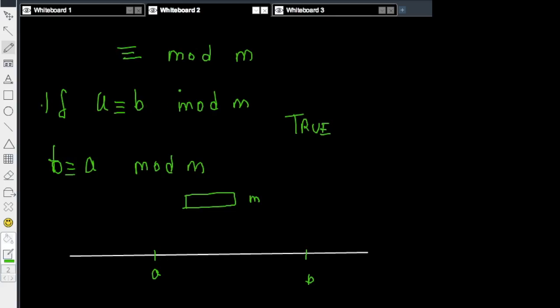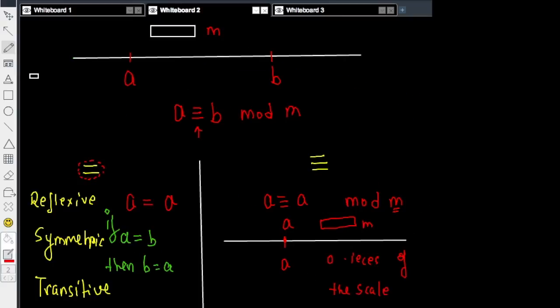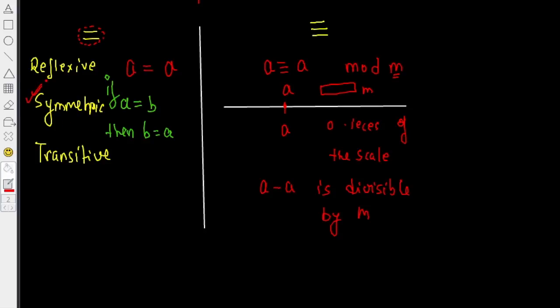If you use algebra, then the first condition says that modulus of A minus B, this is the distance between A and B, is divisible by M. But we know that modulus of A minus B equals modulus of B minus A, so this implies modulus of B minus A is divisible by M. So definitely this symmetric relationship also holds. If A is congruent to B, this implies B is congruent to A mod M.